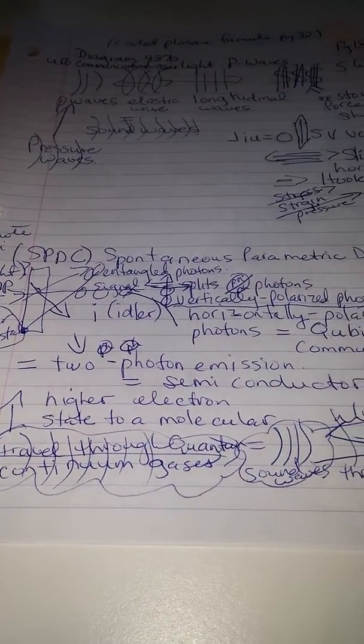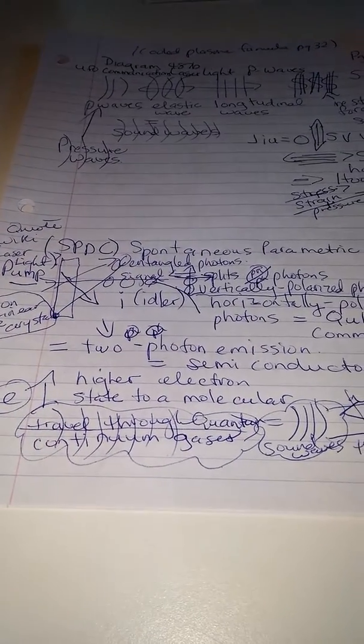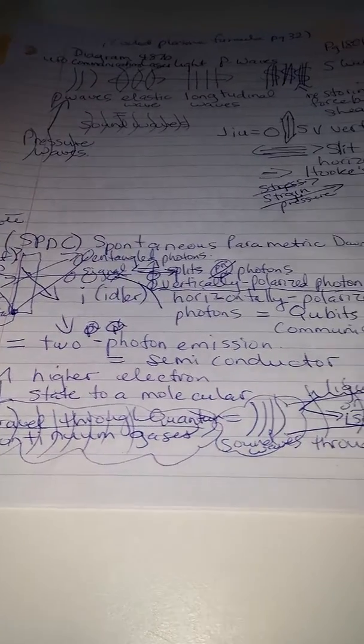Two photon emissions equals semiconductor, a higher electron state to a molecular, it travels through the quantum continuum gases.